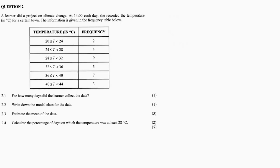Alright, here is question 2 — another question on statistics for the November 2017 Mathematics Paper 2. The link for many more questions for this paper is in the description box. Elena did a project on climate change: at two o'clock each day she recorded the temperature in degrees Celsius for a certain town, and the information is given in the frequency table below.